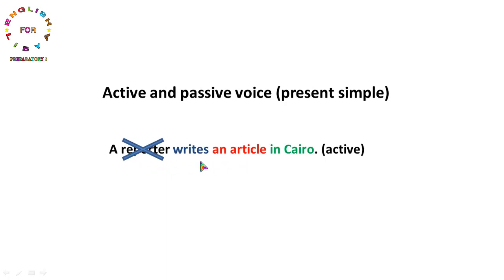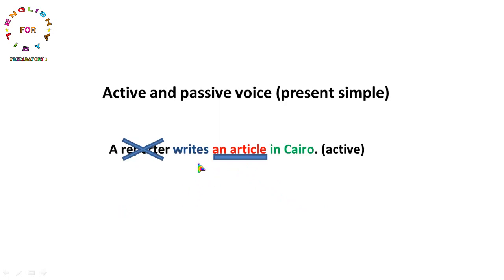الخطوة الثانية: نأخذ الـ Object المفعول به - وهو an article - ونحطه في بداية الجملة. ثم الخطوة الأخيرة: نضع verb to be في هذا الزمن، إما am أو is أو are. مع an article نضع is. ثم نضع الفعل في صيغة التصريف الثالث.